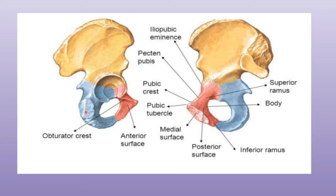From above downwards, the dorsal surface presents a convex surface adjoining the acetabulum, a wide shallow groove, and the upper part of the ischial tuberosity. This is the basic structure of the dorsal surface of the ischium.